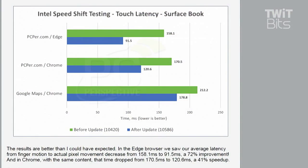It's the touch latency on the Surface Book where it really starts to look interesting. When the Steam OS and Steam boxes started hitting, Ars Technica published something showing Steam boxes aren't as fast as Windows machines — a big part of that is the engineering resources thrown at making an operating system feel faster. Here we're seeing 158.1 milliseconds versus 91.5 milliseconds. That's not a lot of time, but in something as tactile as finger motion to actual pixel movement — click to clunk — that's a 72% improvement. That's going to make the whole machine feel faster.